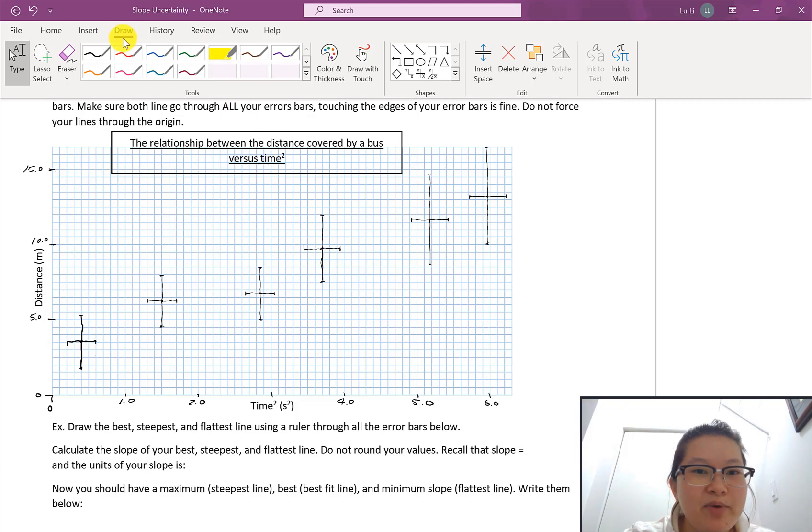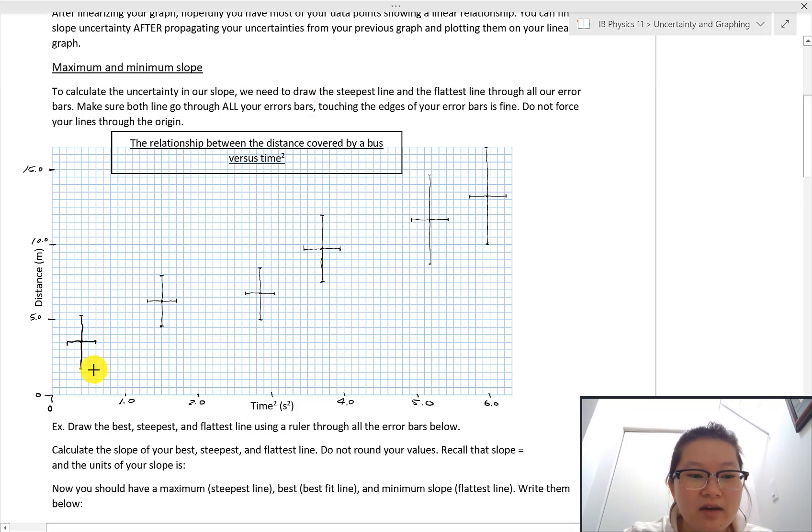I'm going to draw a straight line as best as I could that goes through all of my error bars roughly through the middle as much as I can. Keep in mind that this line, best fit line I'm drawing, should be the best representation of the line that kind of meanders through the middle-ish of your dots.